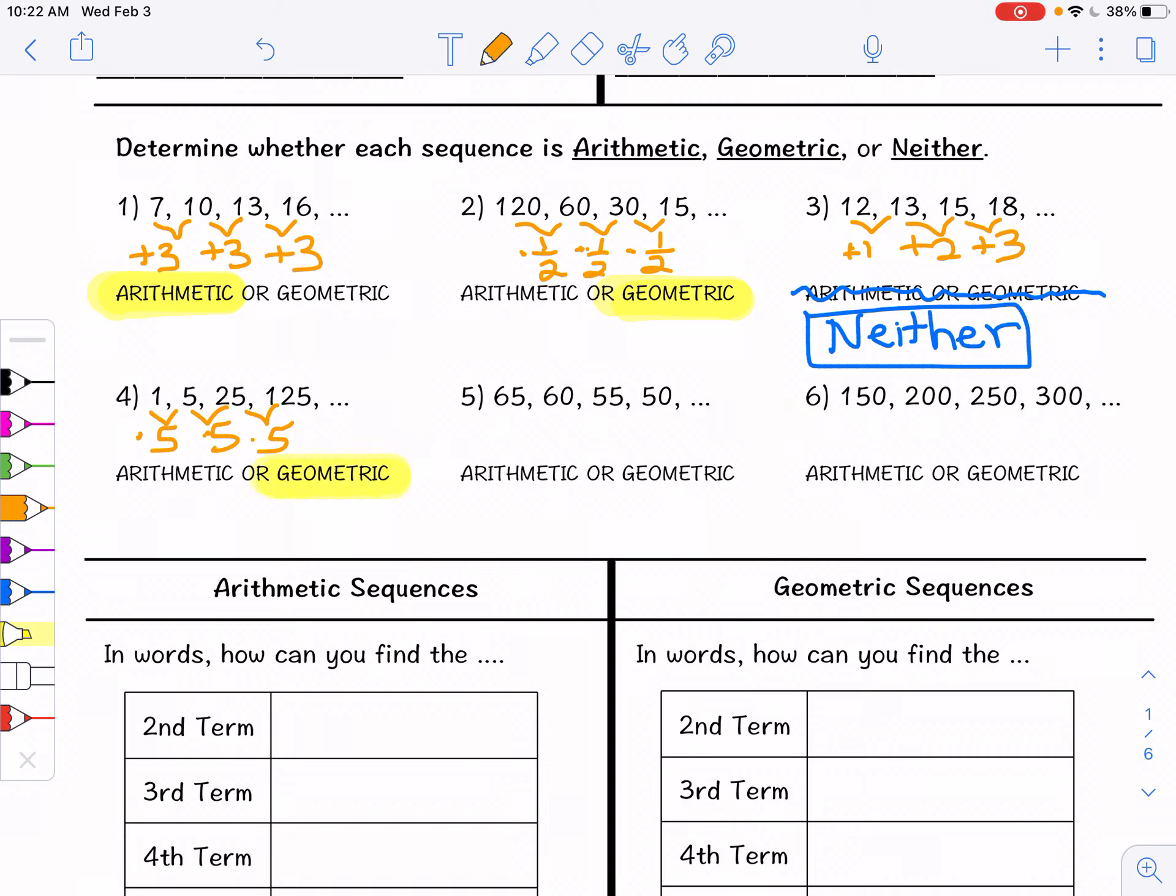65, 60, 55, 50. We are subtracting 5 or adding a negative 5 every single time. So we have an arithmetic sequence.